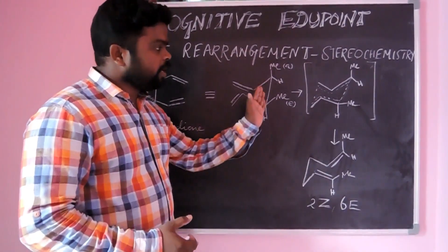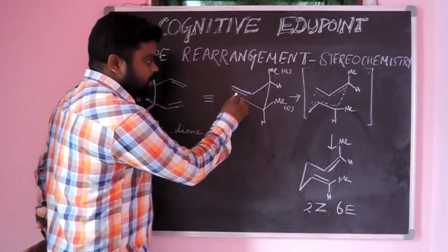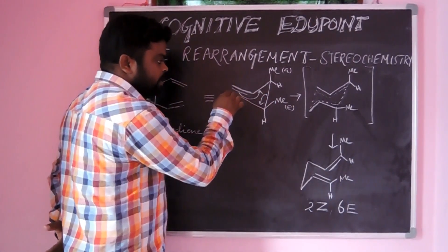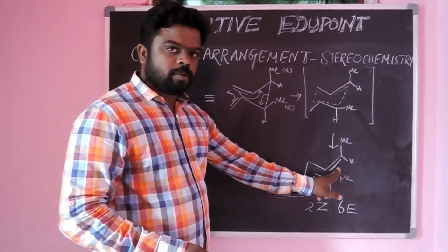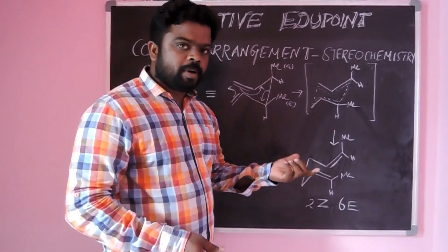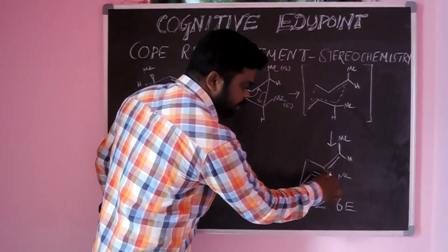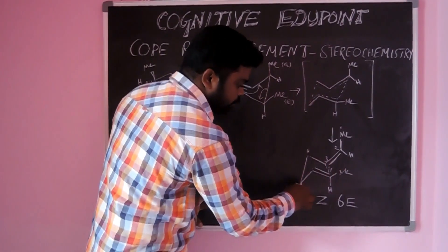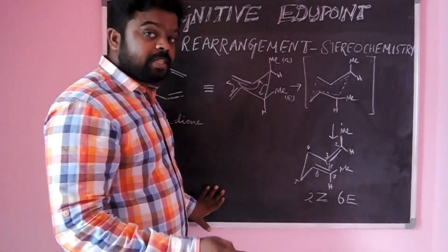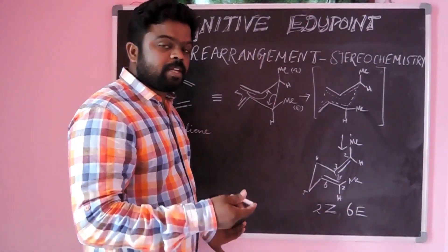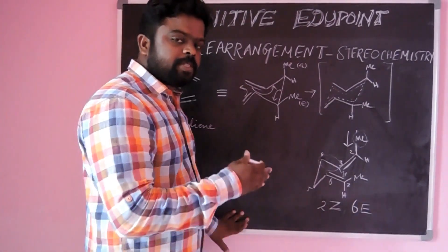This undergoes rearrangement and gives a six-membered cyclic intermediate. Once the cyclic intermediate is formed, it directly gives the product — we can see the bonds moving and shifting to give the product. The stereochemistry here involves double bond formation, and geometrical isomerism is created. We can see one methyl group and one hydrogen on each end. Counting carbons 1 through 7, the double bond is present between the second and third carbon. The second carbon shows Z geometrical isomerism.